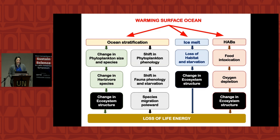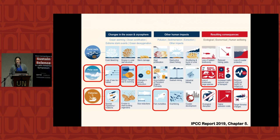This is just a summary of the problems that climate change is driving in the oceans, and we only talked about the ones marked in red. Unfortunately, I don't see clear solutions right now — we can't really change the warming or its effects on the ocean at this point. But if you have any ideas, please share them.